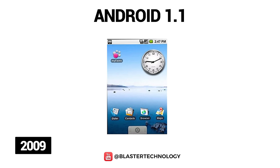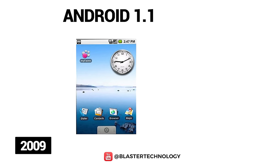Just four months after the launch of the first version of Android, Android 1.1 was launched. What this version brought new was that users could save attachments and messages, details and reviews were available for businesses on Google Maps, a longer in-call screen timeout by default when using the speakerphone, plus the ability to show and hide the dial pad.